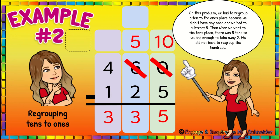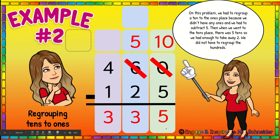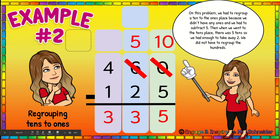Example number two: regrouping tens to ones. On this problem we had to regroup a ten to the ones place because we didn't have any ones and we had to subtract five. Here we had 460 cookies and had to give away 125. We always start on the right in the ones place. If we have zero cookies, we can't give five away, so we went next door and got ten more. We crossed out the six and changed it to a five, and brought that tens rod over to the ones place, changing the zero to a ten. Then ten minus five is five. Over in the tens place, five tens minus two tens left three tens — enough to give away without going to the hundreds place.